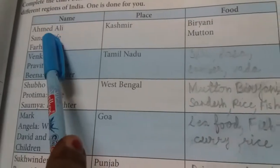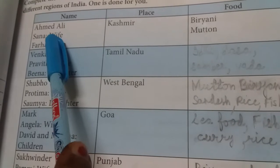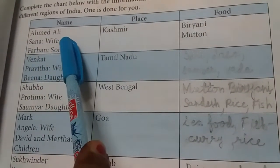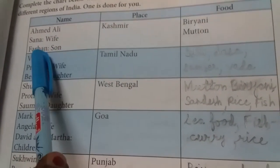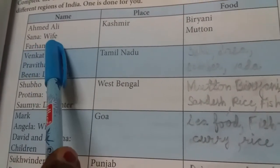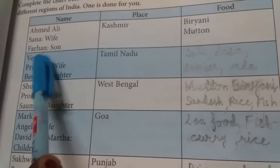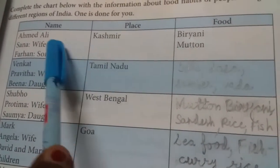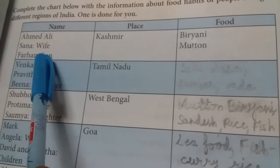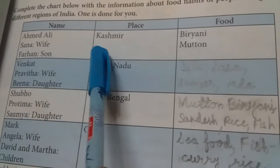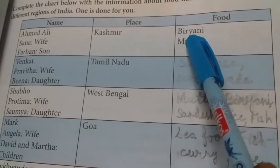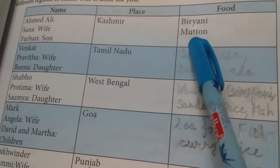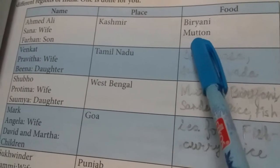The husband's name is Ahmed Ali, wife's name is Sana, and son's name is Farhan. Ahmed Ali, Sana, and Farhan belong to Kashmir. Their favorite food is Biryani and Mutton.